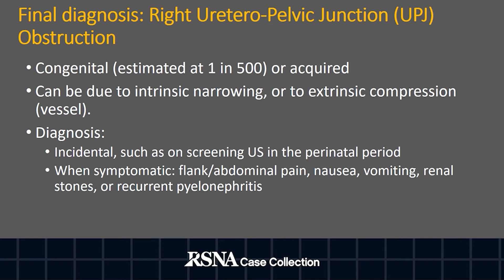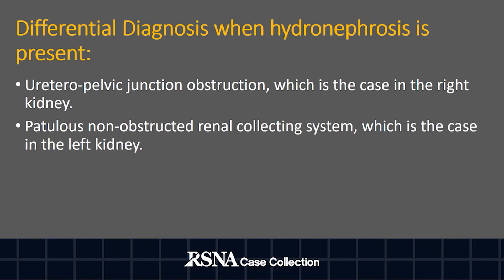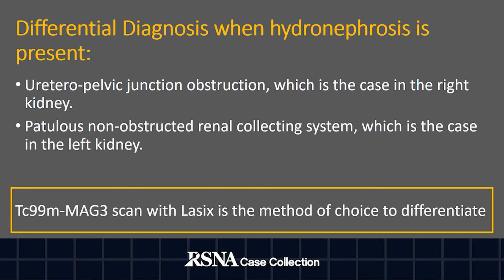When symptomatic, it can present with flank or abdominal pain, nausea, vomiting, renal stones, or recurrent pyelonephritis. Differential diagnosis when hydronephrosis is present includes ureteropelvic junction obstruction, which is the case here in the right kidney, or patulous non-obstructed renal collecting system, which is the case in the left kidney. Technetium-99m MAG3 scan with Lasix is the method of choice to differentiate between both entities.